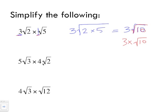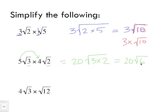Let's look at the next example: five radical three times four radical two. We multiply the five times four, which gives twenty. Then we take the three and two inside one radical symbol, giving us twenty radical three times two, which equals twenty radical six.